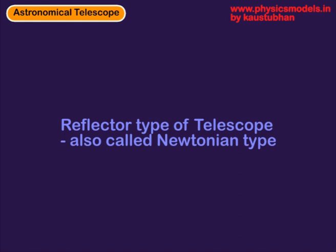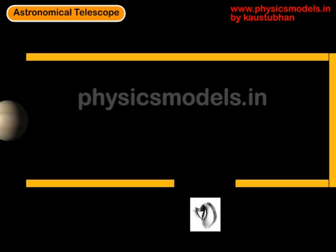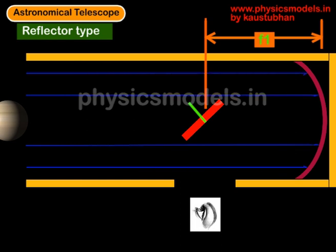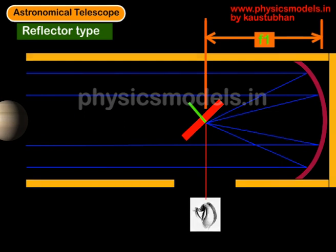Now let's look at the reflector type of telescope. Newton overcame the chromatic aberration issues of the refractor telescope, so in his reflector type telescope he used only reflecting objects, not lenses. The light from the planet falls on a large concave mirror, which focuses it onto a plane mirror placed at an angle, which then reflects it into the eyes of the observer. The diameter of the telescope becomes very big to catch a lot of light from the planet. The plane mirror is positioned exactly at the focal length of the concave mirror, f1, so as long as it is positioned correctly we will get a sharp image of the object.